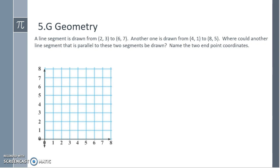A line segment is drawn from 2, 3 to 6, 7. Another one is drawn from 4, 1 to 8, 5. Where could another line segment that is parallel to these two segments be drawn? Name the two endpoint coordinates. Here is 2, 3 to 6, 7 connected with a line segment. Here is 4, 1 to 8, 5 connected with a line segment. I could place a point at 3, 2 or 1, 4 or 0, 5. But one possible segment endpoint coordinates are 1, 4 to the point 5, 8.